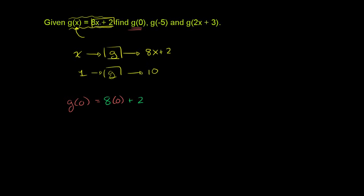So wherever we saw the x, we replaced it with whatever we're inputting. That is our x in this situation. And so this is equal to 8 times 0 plus 2, which is just equal to 2. So g of 0 is equal to 2. Now let's try g of negative 5.